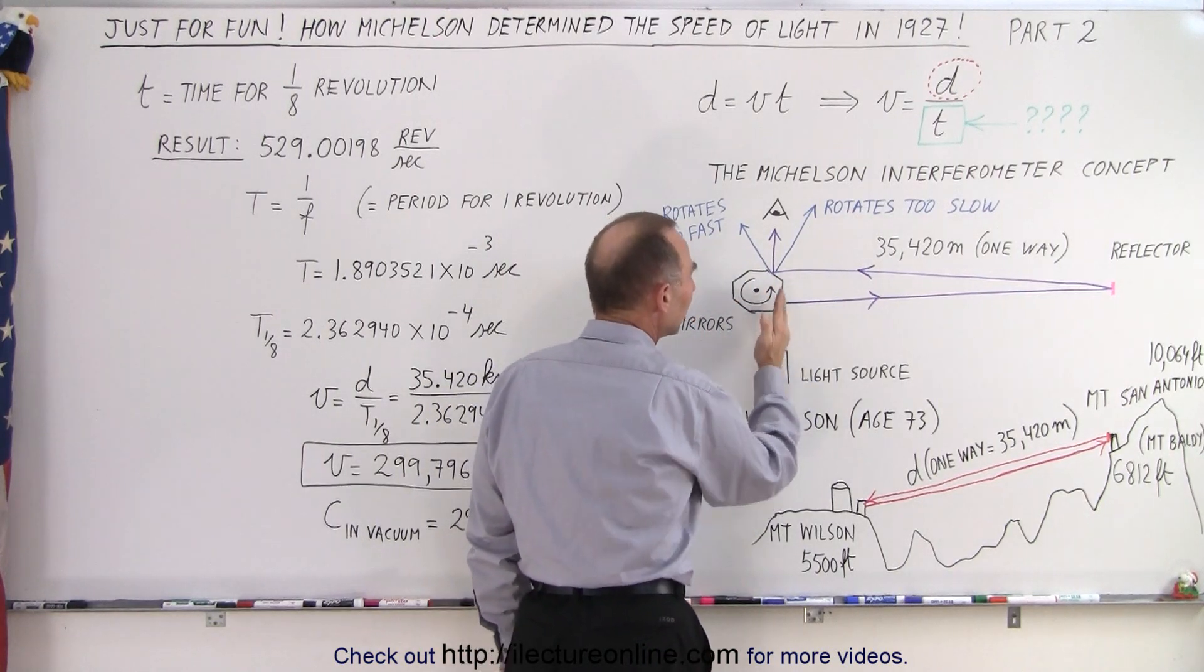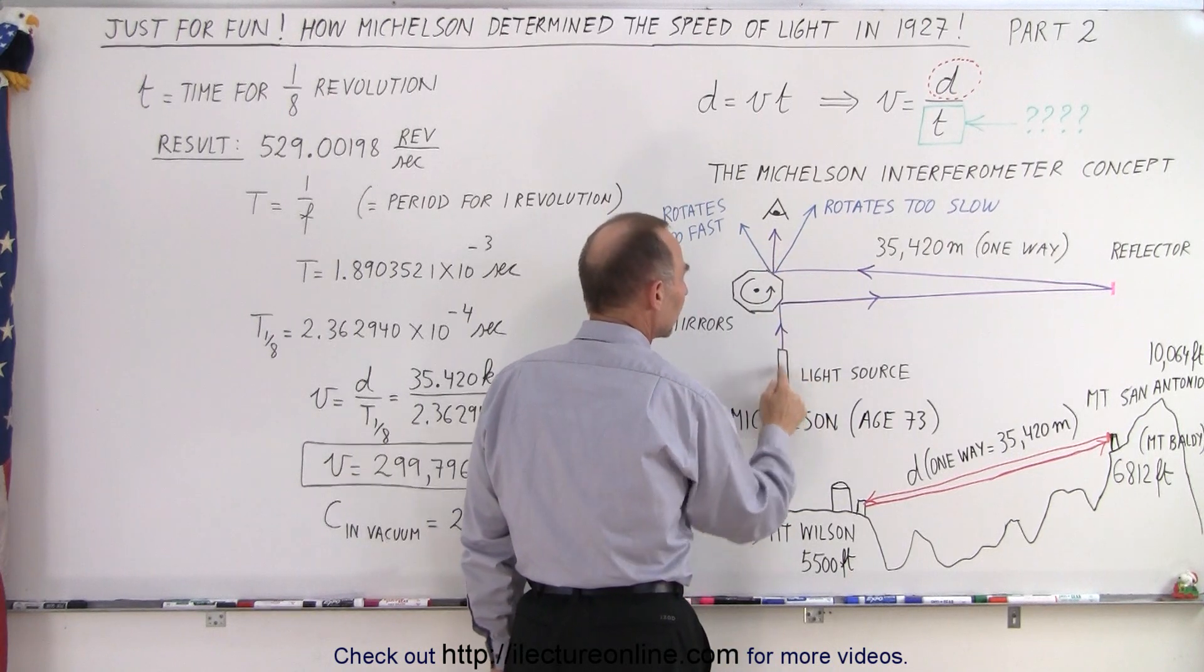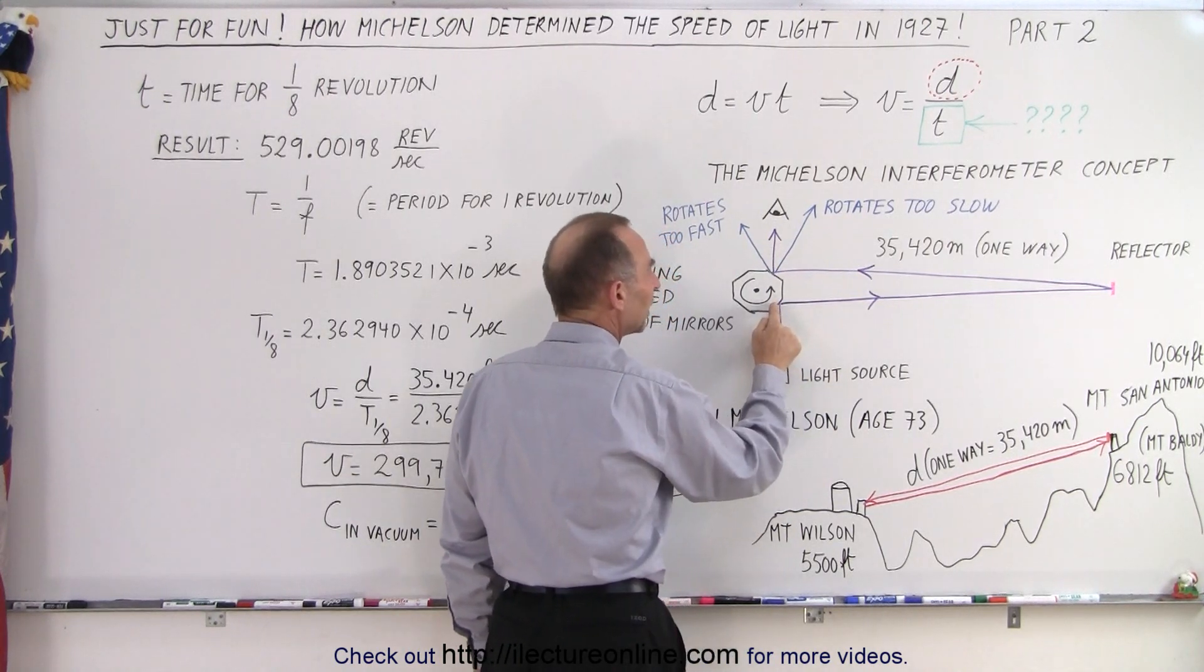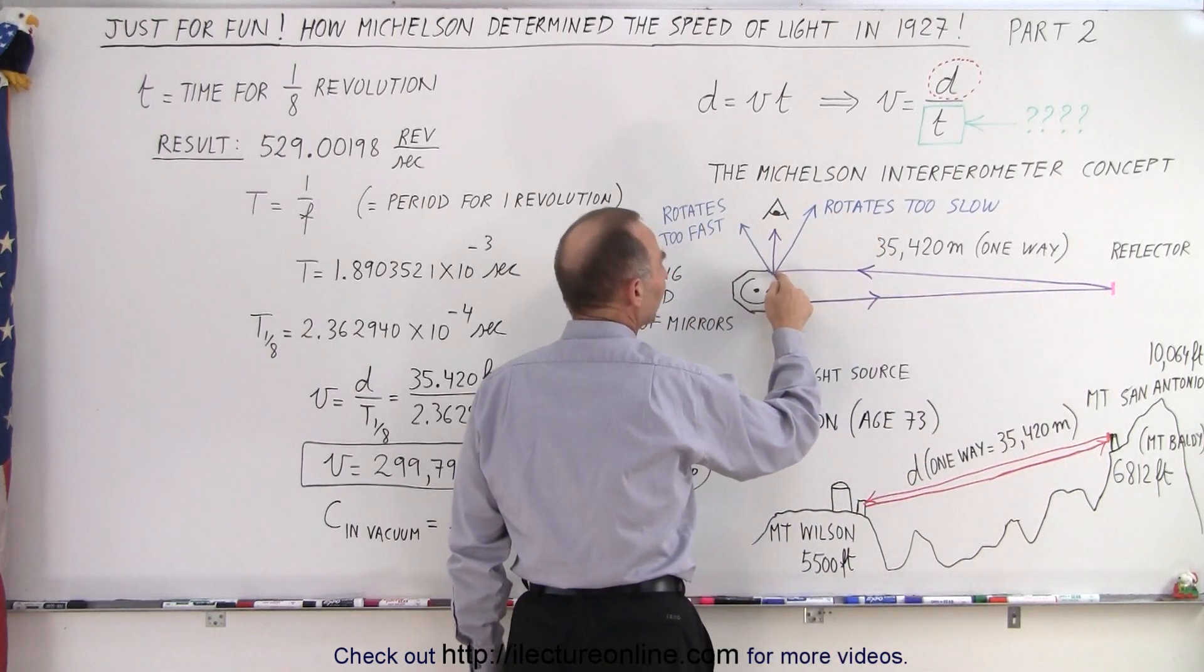But now what happens is you make it rotate. So what happens is first when you rotate it slowly, you see that this mirror would slowly start moving in that direction.